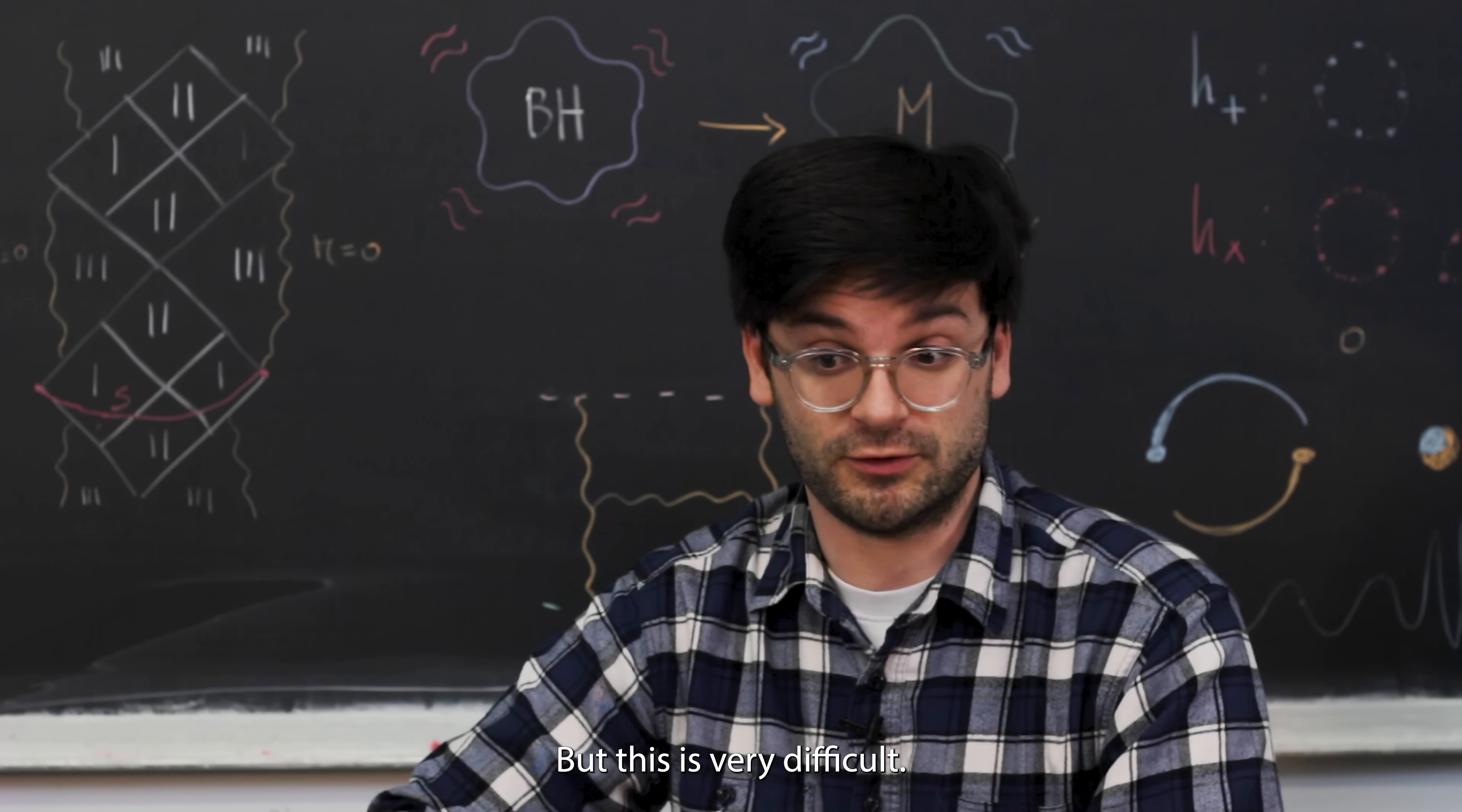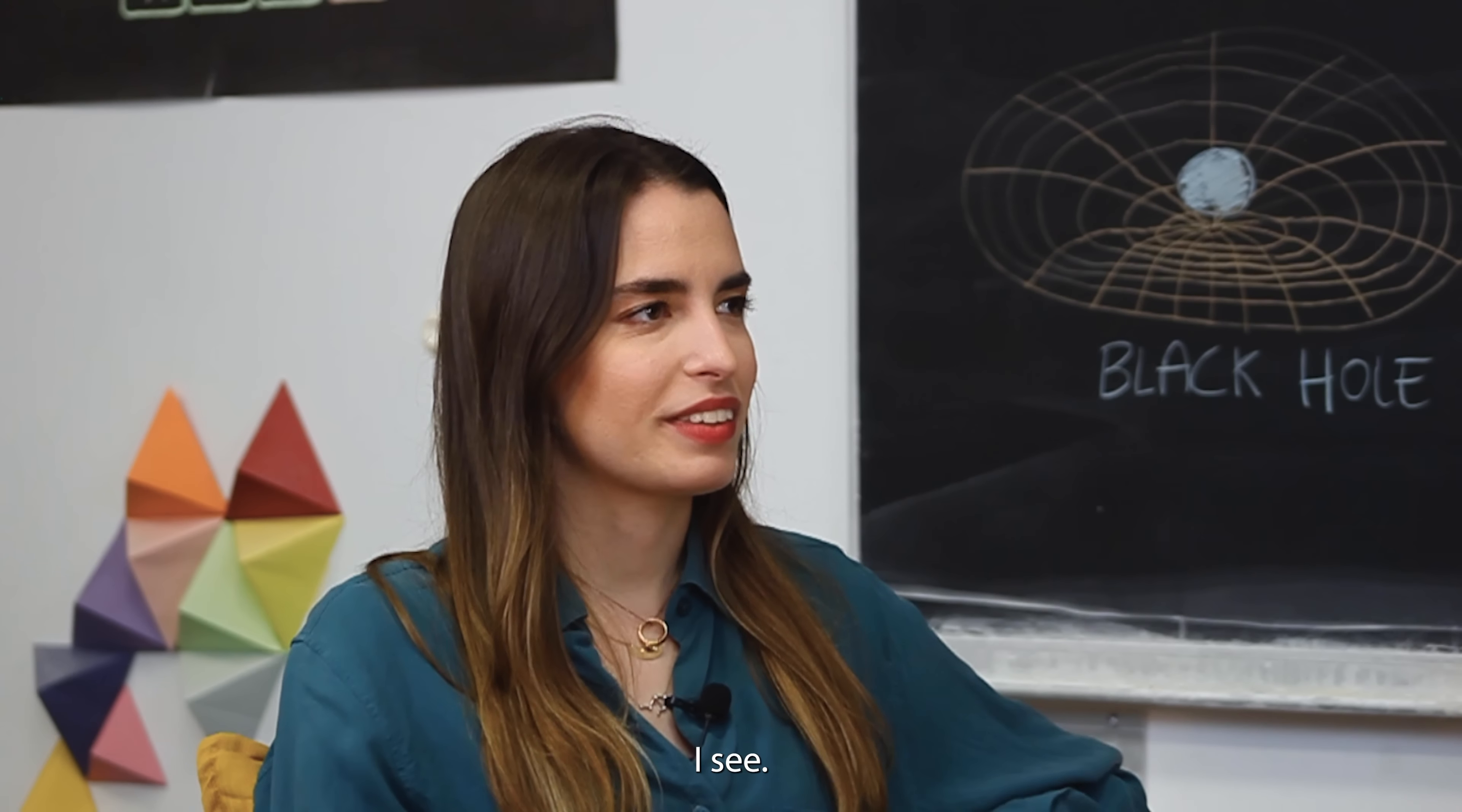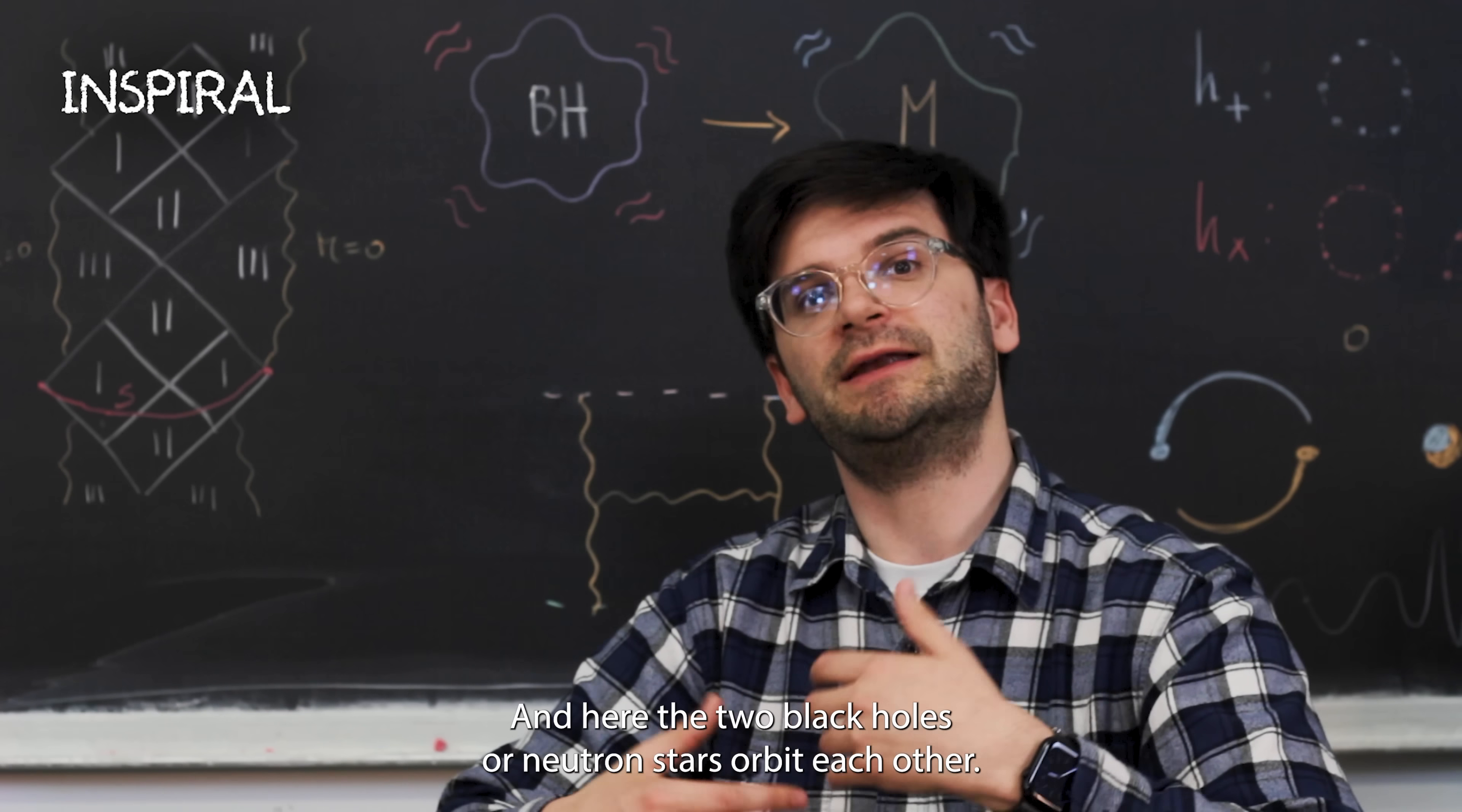In order to describe gravitational wave signals, we need to solve Einstein's equations. But this is very difficult. In fact, in this case, we can't solve them exactly. So what we do is we split up into different teams and use different approximations to work on the different parts of the gravitational wave signal. I see. So what are the different parts of the signal?